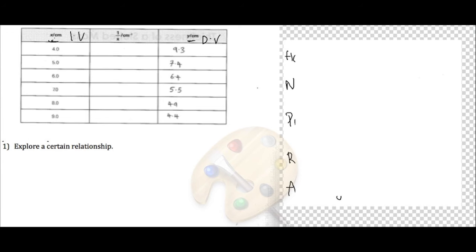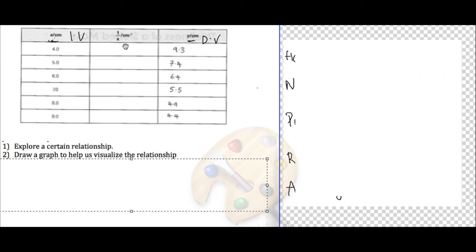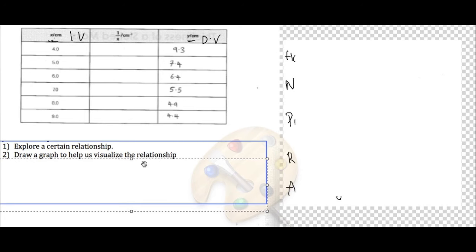Of course, you are a scientist. So after you explore a certain relationship and record your data, you would need to be able to draw a graph. Because drawing a graph helps you to visualize the relationship between these two IV and DV that you've already conducted the experiment for.